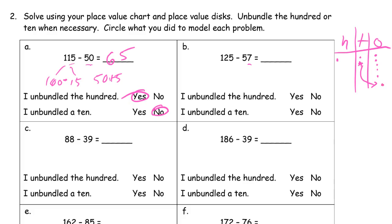I draw the 10 new ones and cross out 7, leaving 3. Then I need to cross out 5 tens, but I only have 1 ten left, so I have to break up the 100 to get 10 tens. I cross out 5 tens. What's left: no hundreds, this 1 ten plus 5 more makes 6 tens, and 3 ones — that's 68. I unbundled the 100 and also unbundled a 10.